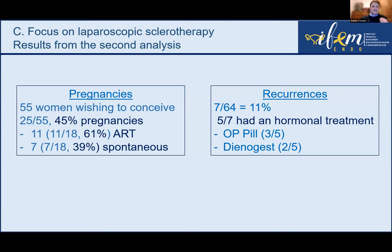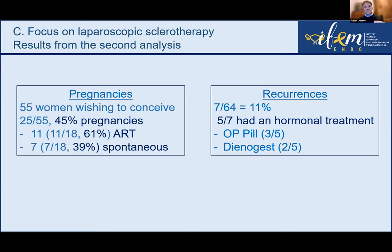Regarding pregnancies: 55 women wished to conceive after surgery; 25 achieved pregnancy. The ratio was 61% via ART and 40% spontaneous. Regarding recurrence: 7 out of 64 women who completed postoperative ultrasound had recurrence, giving a rate of 11%. Five had no hormonal treatment; three were on continuous progestogen-only pill; two were on dienogest. The mean follow-up is approximately 20 months, and we are awaiting more data.